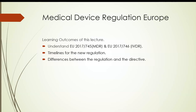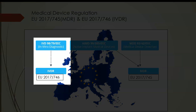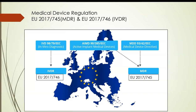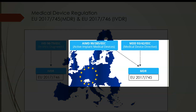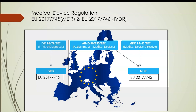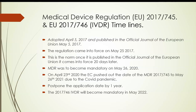Differences between the regulation and the directive: The In Vitro Diagnostic Directive IVD 9879 EEC will be replaced by the In Vitro Diagnostic Regulation 2017-746. The regulation was passed by the European Commission in 2017. The Active Implantable Medical Device Directive 90/385/EEC and the Medical Device Directive 93/42/EEC are being replaced by the Medical Device Regulation 2017-745. Both regulations were adopted on the 5th of April 2017 by the European Commission and published in the Official Journal of the European Union on May 5th 2017.